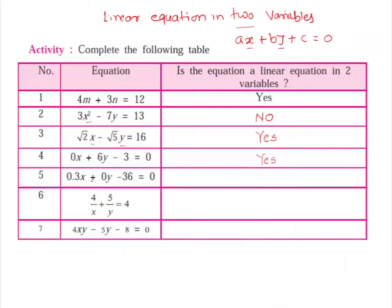Now consider 0.3x plus 0y minus 36 equals 0. In this case also we have two variables and the coefficient of the second variable is 0. That's okay, so this is also a linear equation in two variables.